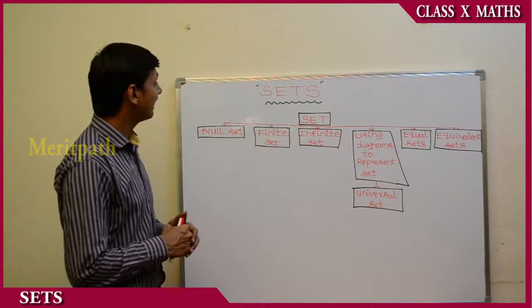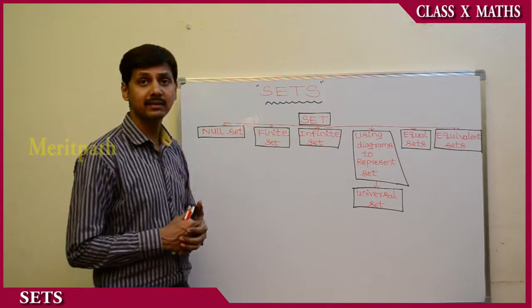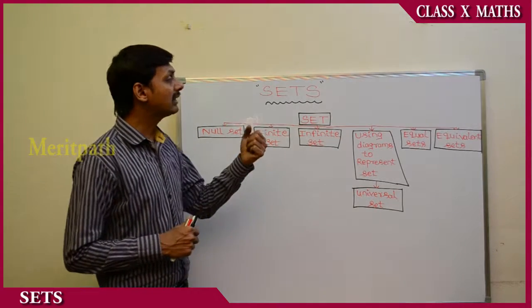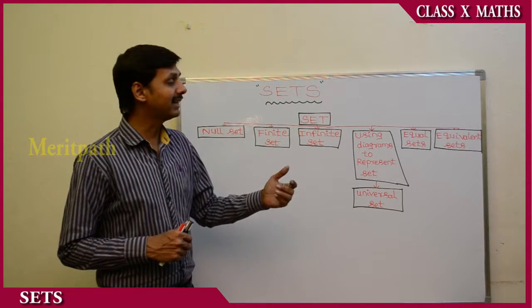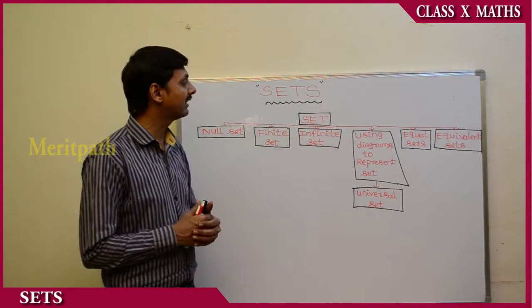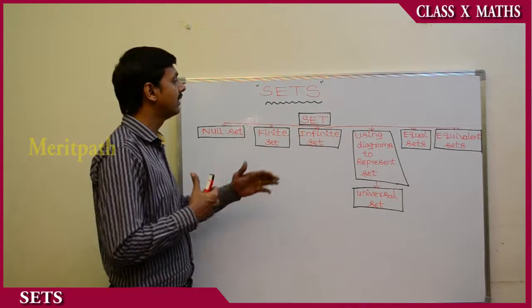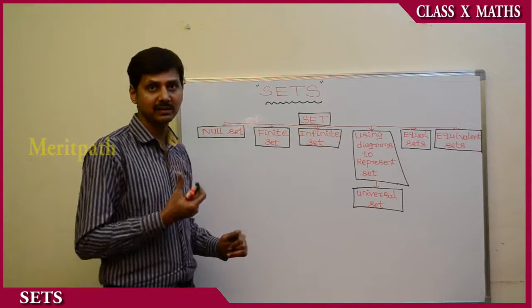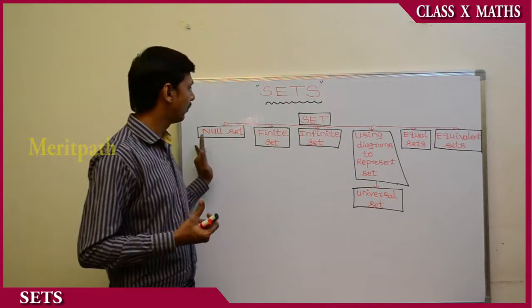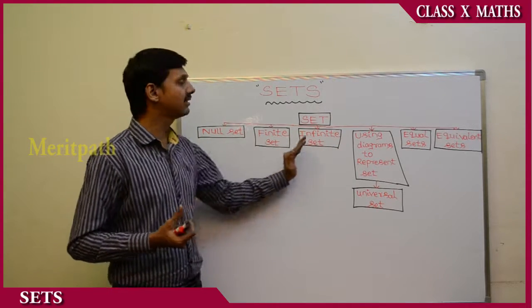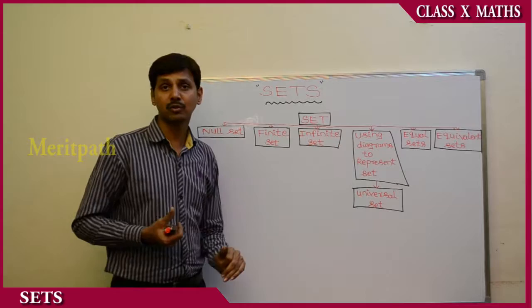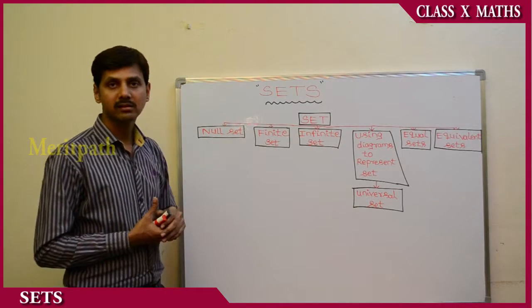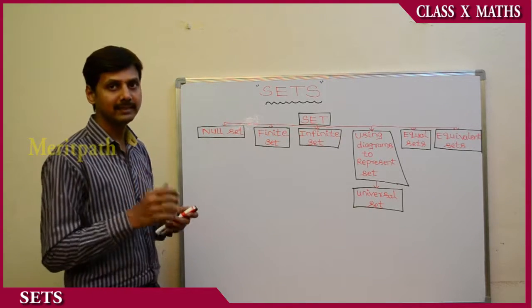The types of sets are: null set, finite set, infinite set, and equal sets. This is also the representation we use with diagrams to represent sets. Let's discuss all these types, starting with the null set.